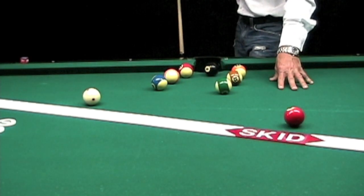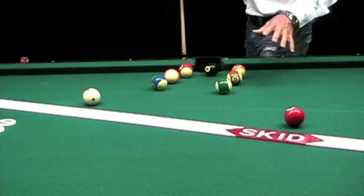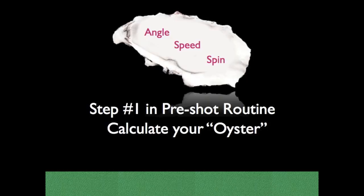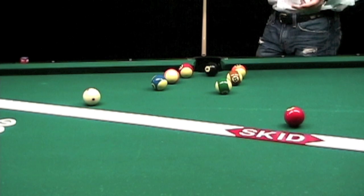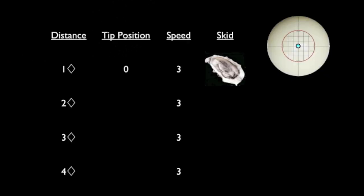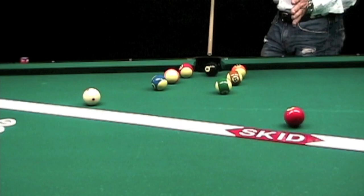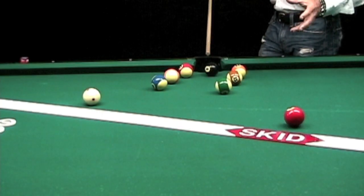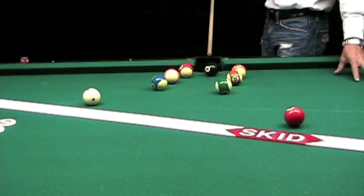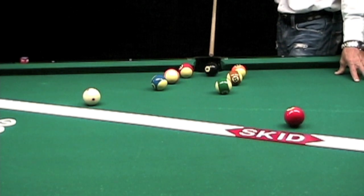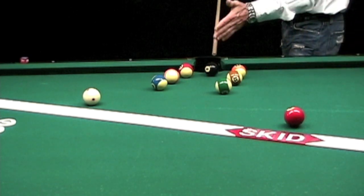So what I have to do is calculate my oyster. I always need to calculate oyster first, and that is angle, speed, and spin based on the distance for a stop shot. The second thing I do is ask myself, will oyster put me in position for my next shot?